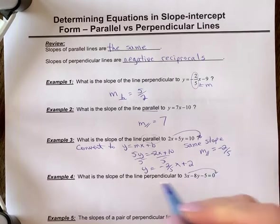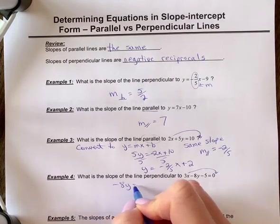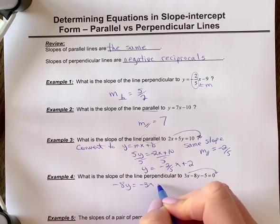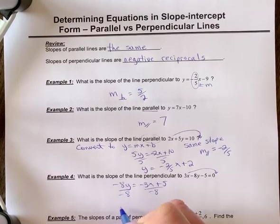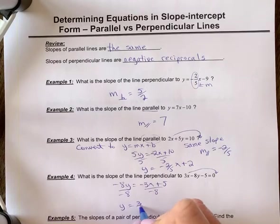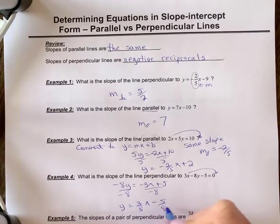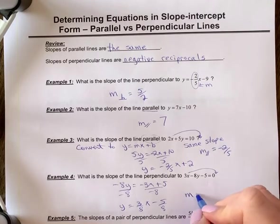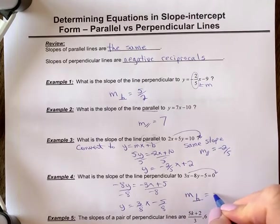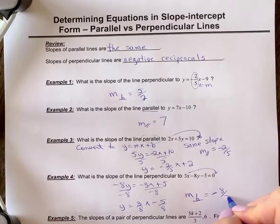You're going to move this, you're going to isolate y. So you get negative 8y is equal to negative 3x plus 5. Divide off the negative 8, y is equal to 3 eighths x minus 5 over 8. So my slope of this line is 3 eighths. So the slope of a line perpendicular is negative 8 over 3.